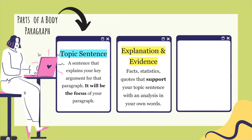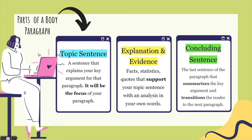Then you're going to have some explanation and evidence. This is where you get the facts, statistics, and quotes that support your topic sentence with analysis in your own words. And then you're going to put a concluding sentence — the last sentence of the paragraph that summarizes the key arguments and transitions the reader to the next paragraph.